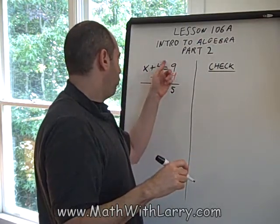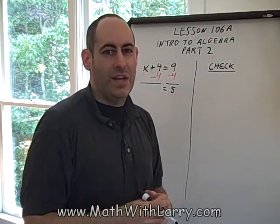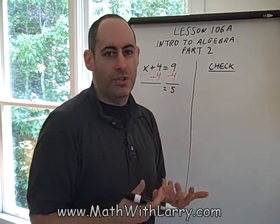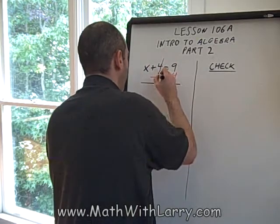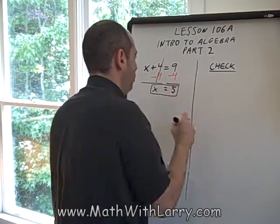Now, on the left, recall how this works. The plus 4 and the minus 4, we can say that they cancel out, but what really happens is that plus 4 and minus 4 equals 0. And in addition, in the world of addition, we don't bother to write the 0. So on the left, we're left with just x. And we have our answer: x equals 5.